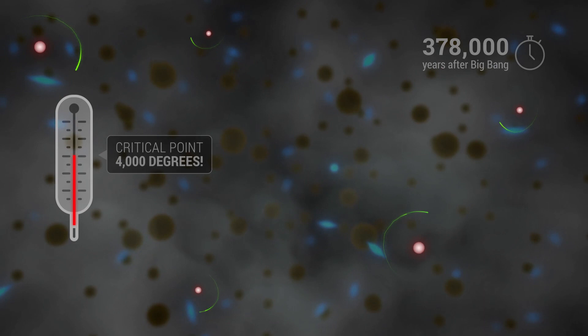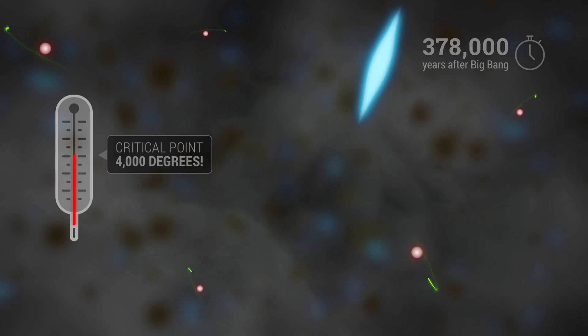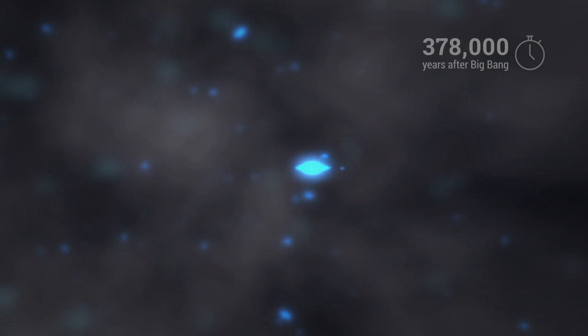And now, with the electrons out of the photons' way, the path was clear for light's great escape. 378,000 years after the Big Bang, the fog finally lifted.